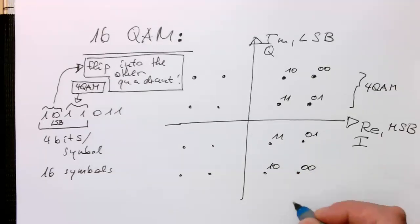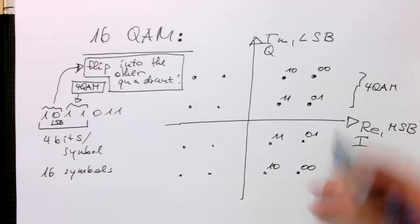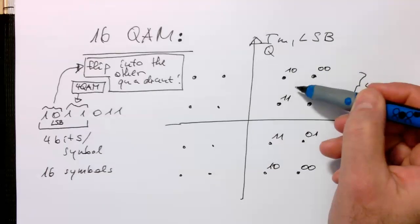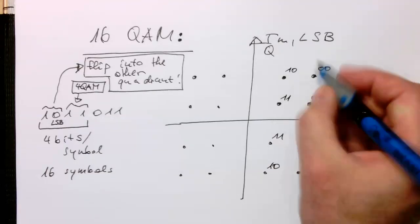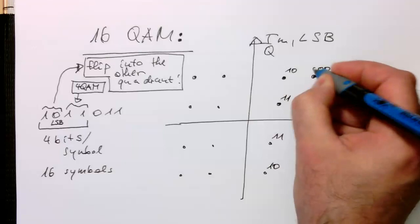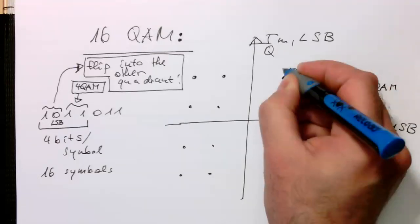And so now, so the LSB decides that. So then therefore here, so the third bit is always 0.